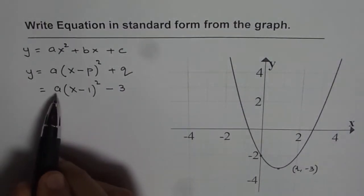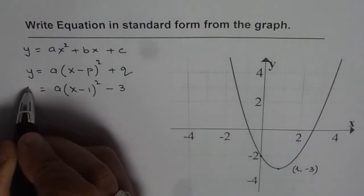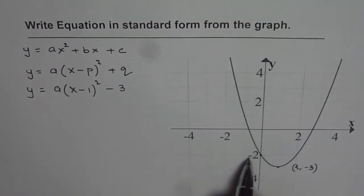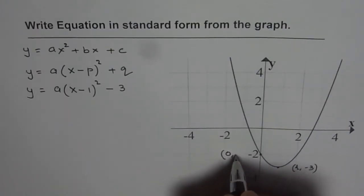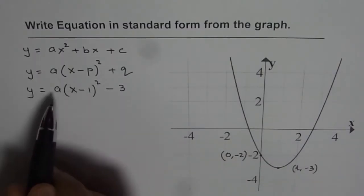Now to find the value of a, we will place this point -2, the y-intercept which is really x value of 0 and y value of -2, in our equation to find a.